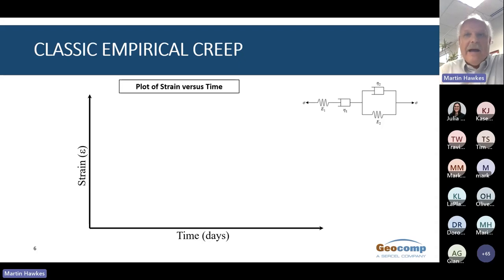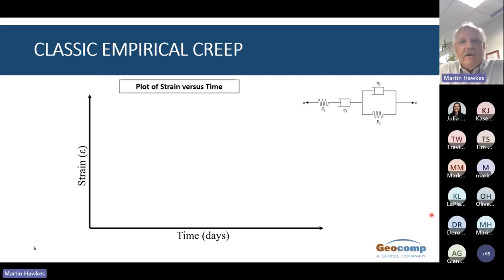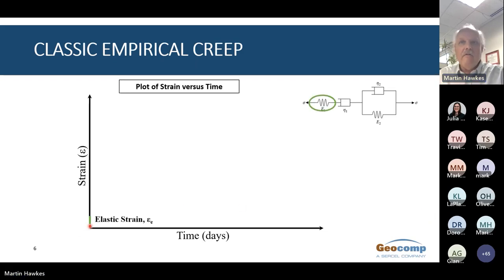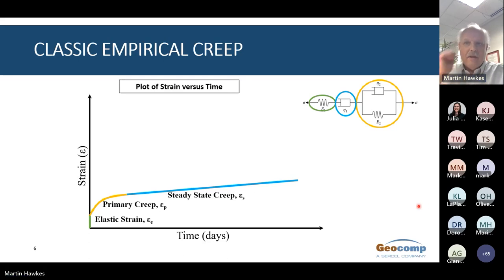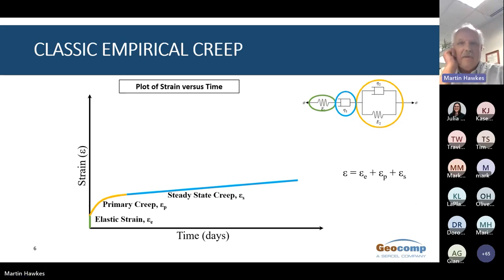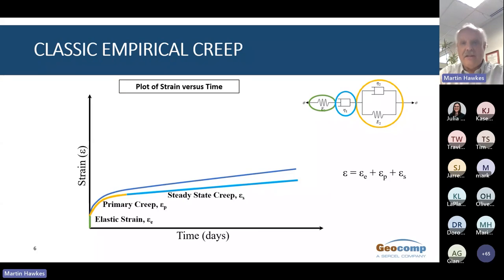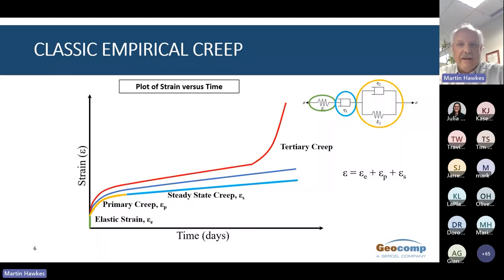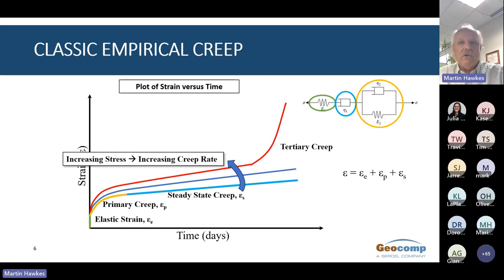In classic creep models, imagine the model depicted by springs and dashpots subject to a constant stress. The dashpot is a viscous element in which behavior is time-dependent and deformations are plastic. In this model there is an initial elastic strain, followed by primary creep, and then steady-state creep. Steady-state creep continues at a constant rate of strain per day. The total strain is the sum of elastic strain, primary creep, and steady-state creep. If the stress is increased, the strain increases and the rate of steady-state creep increases. If the creep rate reaches a threshold rate, the creep rate increases rapidly until failure — this is called tertiary creep.